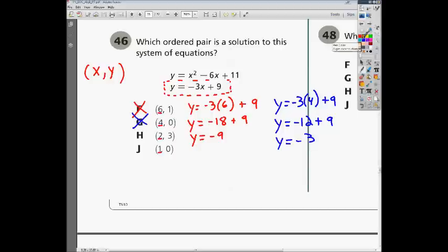Well, let's check H. We already checked F. All right, let's check H. If you plugged in a 2, you'd have y equals negative 3 times 2 plus 9. Well, negative 3 times 2 is negative 6. And negative 6 plus 9 is 3. So we're probably thinking that when we plugged in a 2, we got out a 3. So we're probably thinking that H is going to end up being our correct answer.